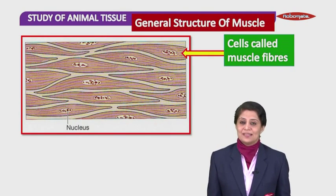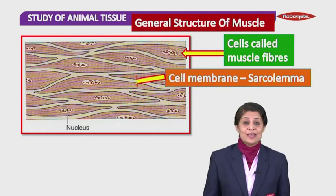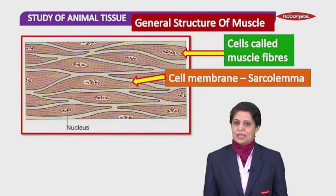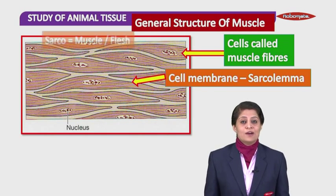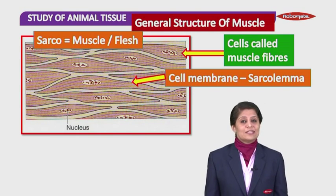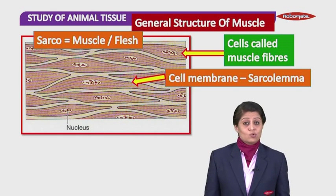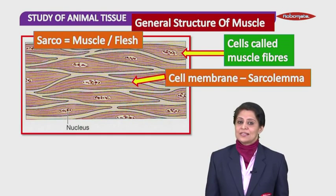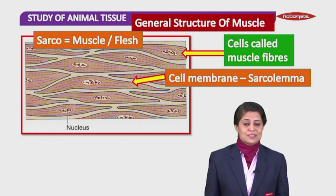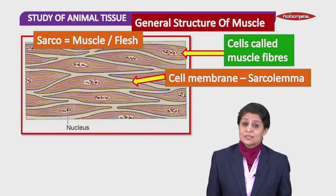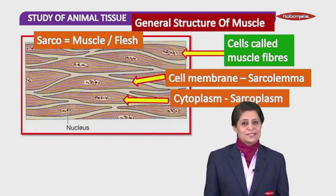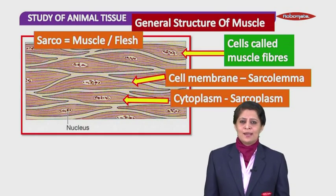In the muscle cells, the membrane which covers them is known as sarcolemma. Sarco is derived from the word flesh or muscle, and lemma means membrane. So sarcolemma is the membrane of muscle cells. Whenever we're talking about muscle cells, we will hear this prefix sarco quite often. The cytoplasm in muscle cells is known as sarcoplasm. In this sarcoplasm, you can see some very small thin fibrils present.